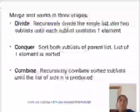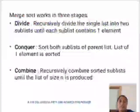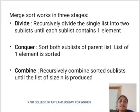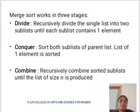Merge Sort works in three stages. The first one is Divide: recursively divide the single list into two sub-lists until each sub-list contains one element. The next one is Conquer: sort both sub-lists of your parent list.